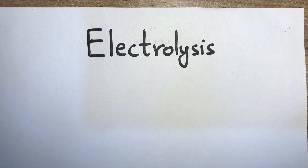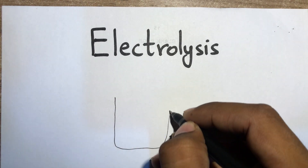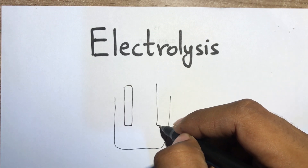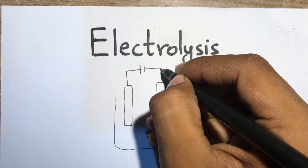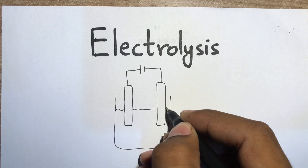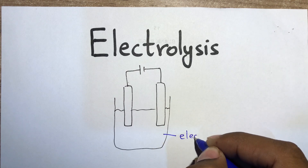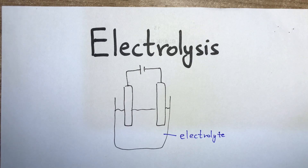Electrolysis occurs in an electrolysis cell. The main features of an electrolysis cell include a beaker, two electrodes connected to a battery, and a liquid called an electrolyte. The electrolyte is either an aqueous solution of ions or a molten ionic compound.